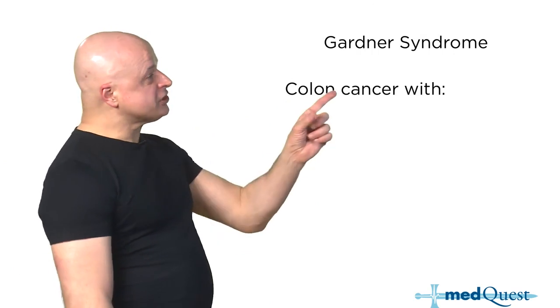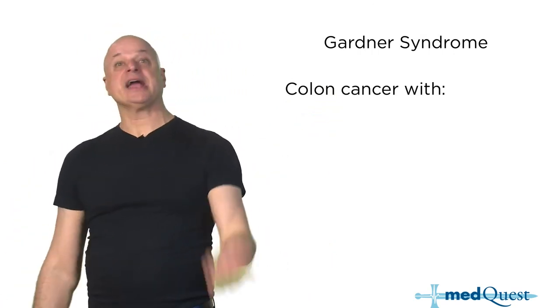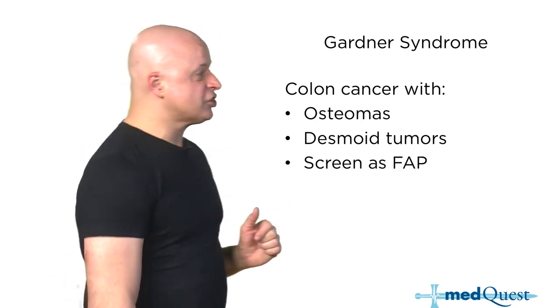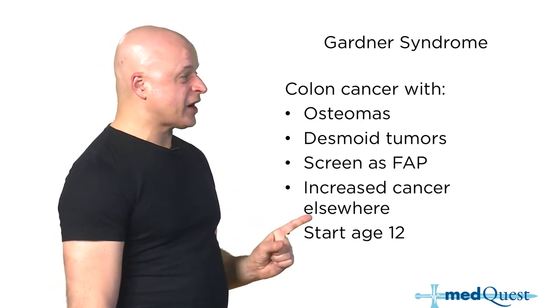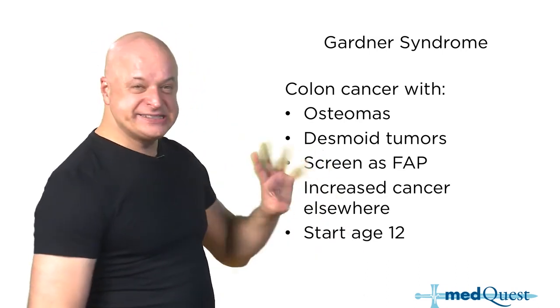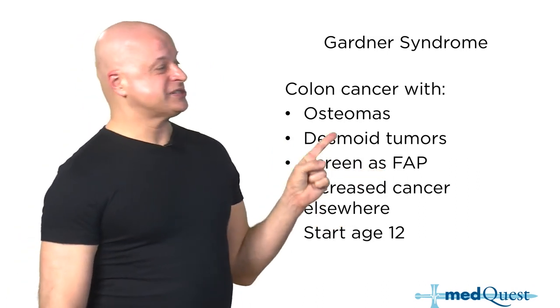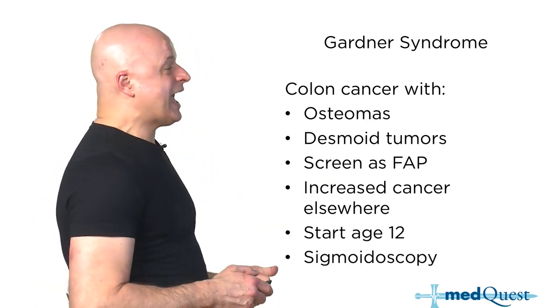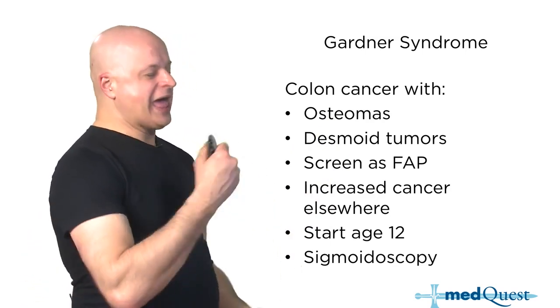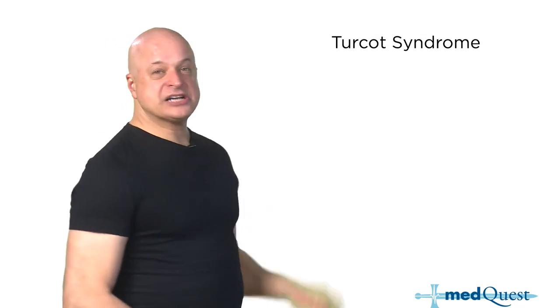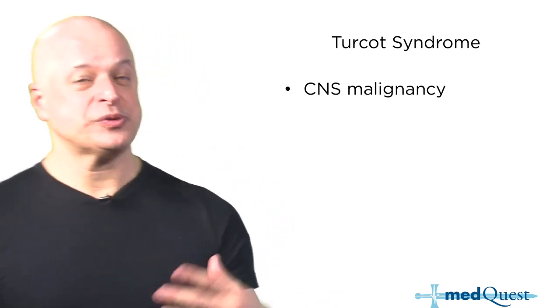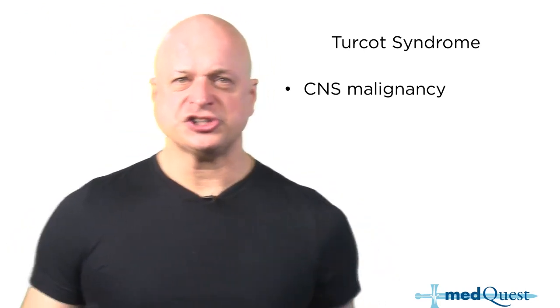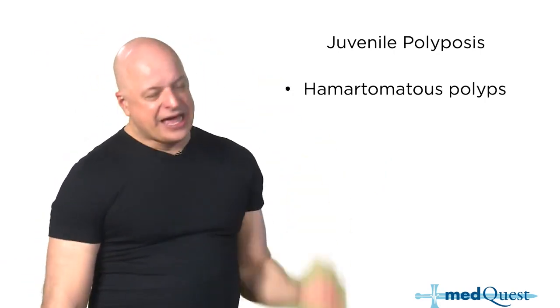Gardner's syndrome previously said no extra screening — now it's age 12. Gardner's syndrome involves an APC (adenomatous polyposis coli) gene and gives you extra teeth, desmoid tumors, osteomas, and teratomas. You need to look for cancers elsewhere because it's a genetic disease. Screening with sigmoidoscopy starts at age 12, same as FAP. Juvenile polyposis also involves hamartomas, and it's a change that screening starts at age 12.